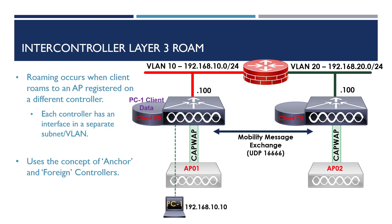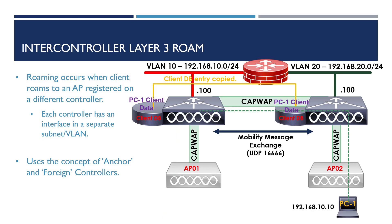As before, the controllers will communicate with each other via mobility messages, but this time instead of copying the database entry to the new controller, the updated database entry is copied over to the new controller. In addition to this, we now class the first wireless controller our client associated with as the anchor controller. The first controller our client associates to is always known as the anchor controller. The new controller the client has roamed to is known as the foreign controller. Our client has kept the IP address it was assigned when it associated to the first controller. This occurs during Layer 3 Inter-Controller Roaming to avoid the client having to connect to DHCP to receive a new IP address on the new subnet, which would delay the time it takes the client to roam.